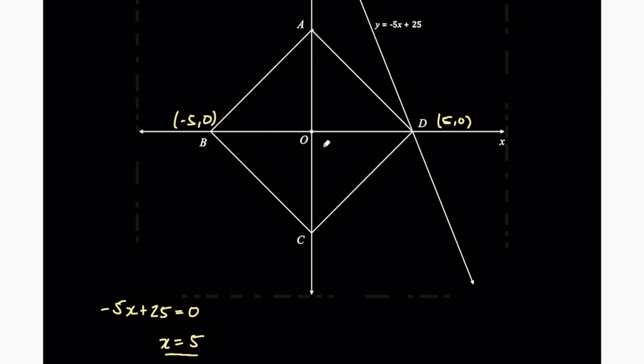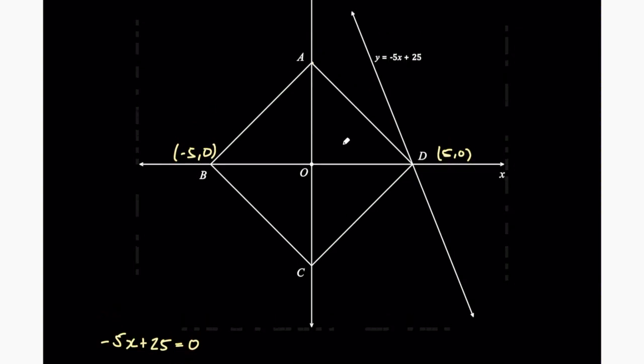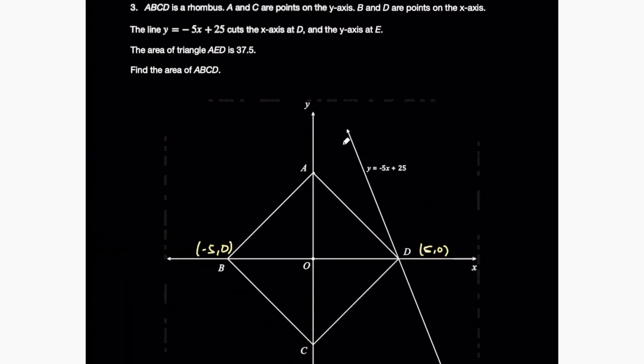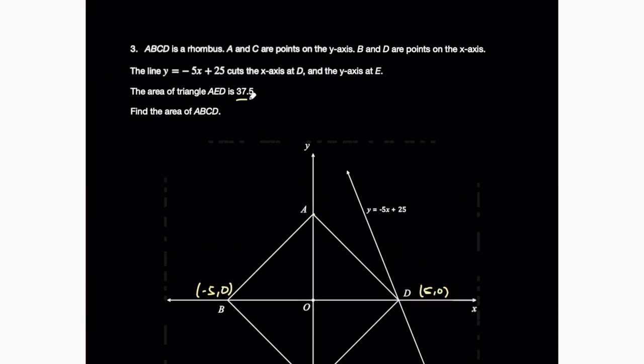And then we need point A. This is where this area comes in useful because they tell you this line cuts the Y axis at E. So we need to find point E up here. And you should know how to find the Y intercept of a line from the equation of that line. It's the constant added on the end. So looking at this equation, you should know that the Y intercept straight away is 0, 25.